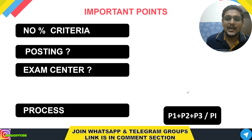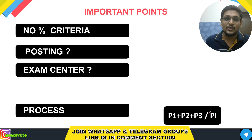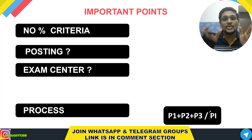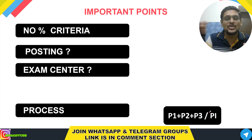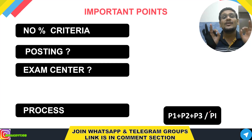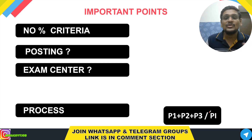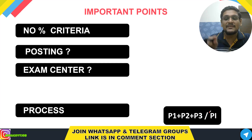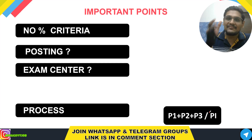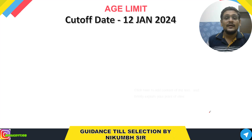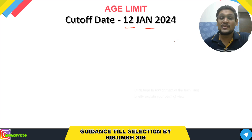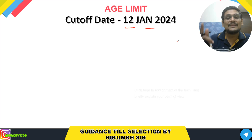For Section Officer, there is Paper 1, Paper 2, Paper 3, and an Interview, and based on this combined score they will select you. For Assistant Section Officer (ASO), there is no interview — they will directly conduct CBT that is P1, P2, and P3, and based on these three they will shortlist for the ASO post. The age limit cutoff date is 12th January 2024.